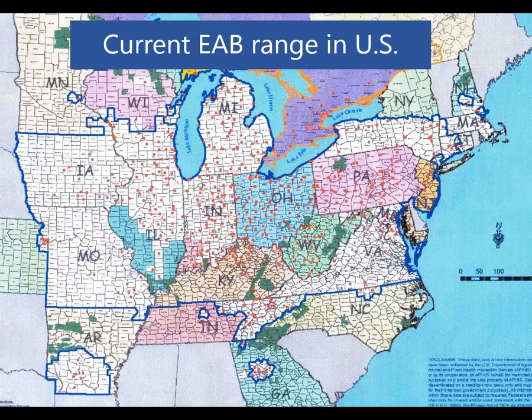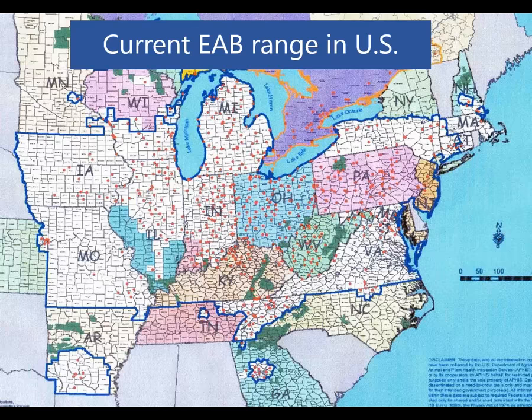This map shows the emerald ash borer range in the U.S. as of last year. Each orange dot represents a known infestation. Where dots are continuous across a state, the infestation is throughout the entire state; toward the edges the infestations are more spotty. Notably, the six dots in Arkansas represent finds that occurred in 2014 and are among the closest infestations to Texas right now.